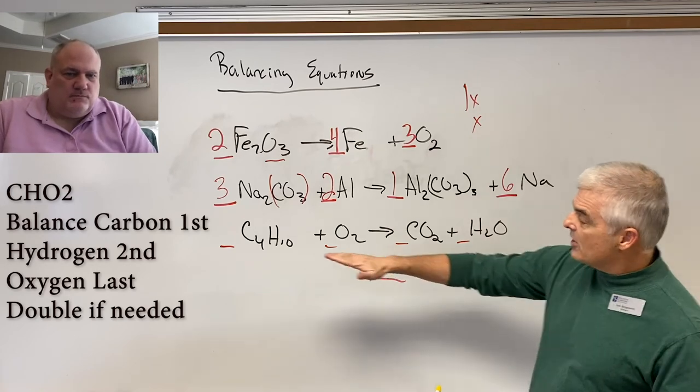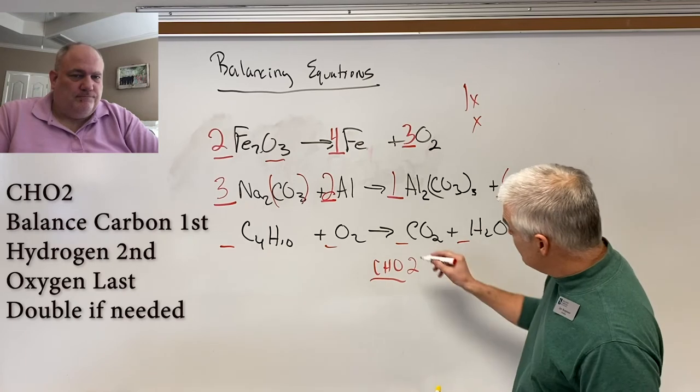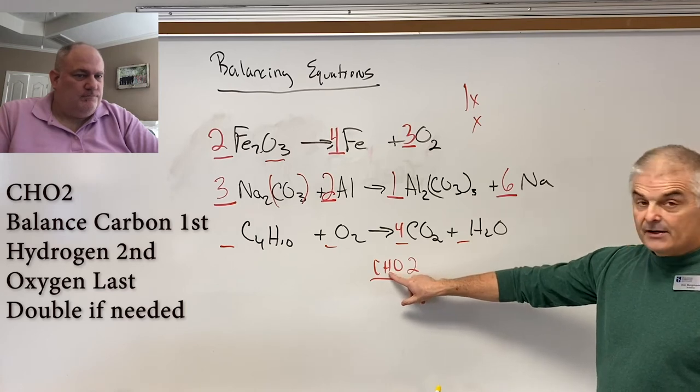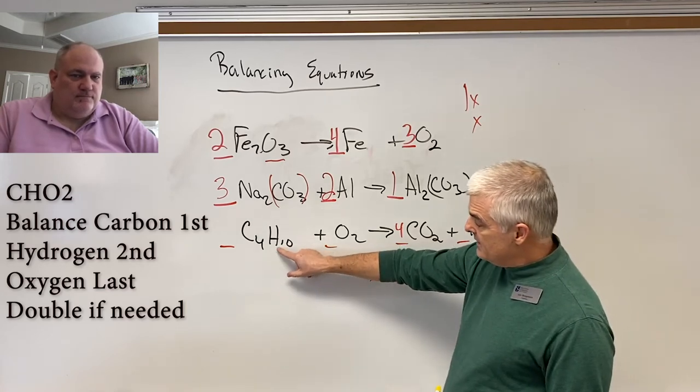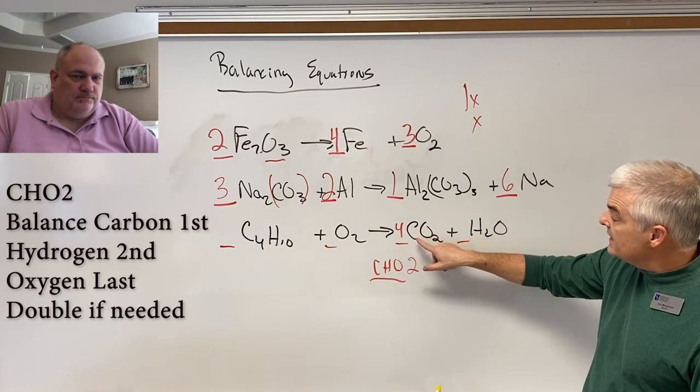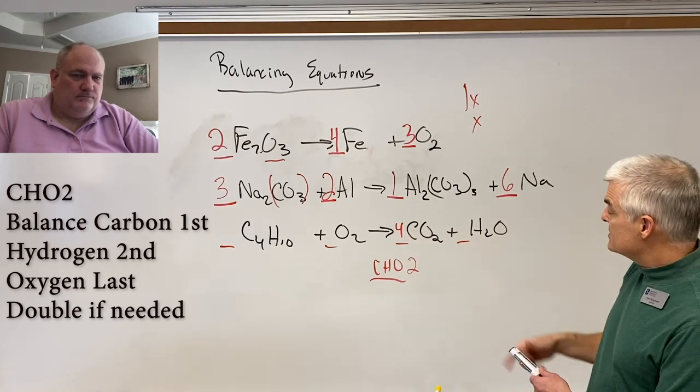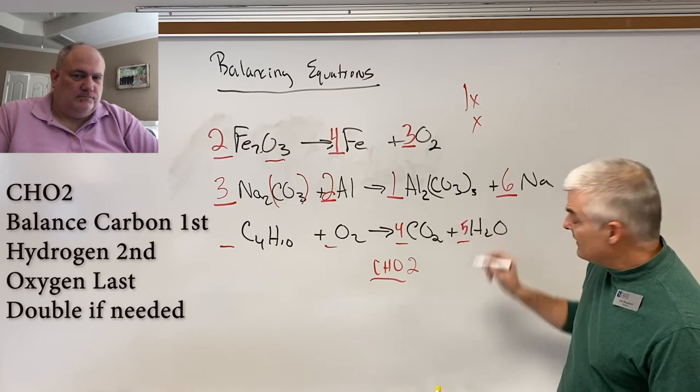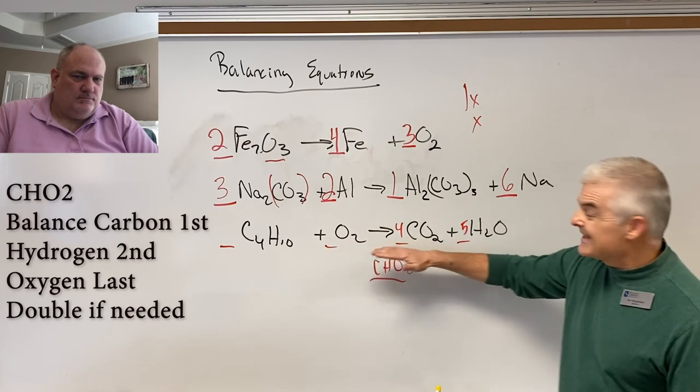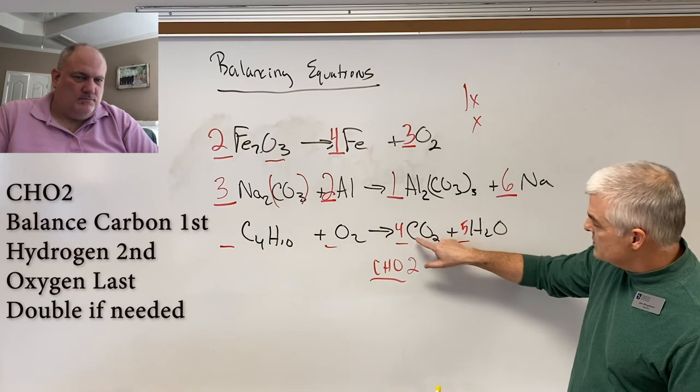So let's do the carbon first. How many carbons on the left side of C4H10? Four. So I'm going to fix that by putting a four next to the CO2. Now it's CHO2. So what do I do next? Hydrogens. How many hydrogens on this side? You got ten. So to fix that, I put the four here into the C because there's only C's in the carbon dioxide. In the hydrogen, the only place to find hydrogen is in the water. So to make that ten, I put a five here.